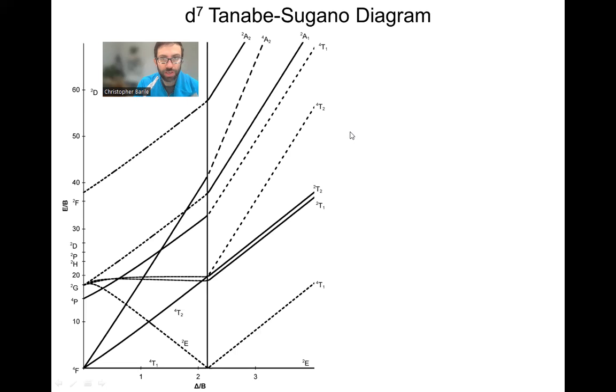Okay, so in this video we are going to go over spin transitions, spin allowed transitions, in the D7 Tanabe-Sugano diagram. For this diagram you're going to want to use it if you have a D7 octahedral complex or you have a D10-7, a D3 tetrahedral complex.